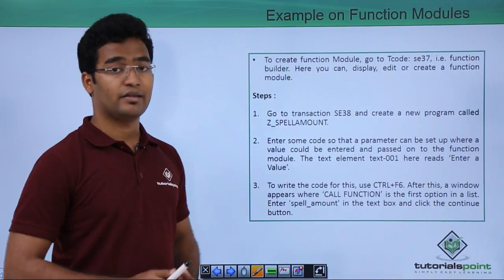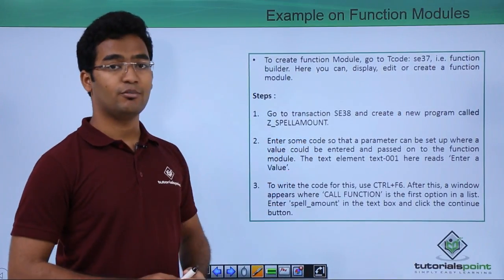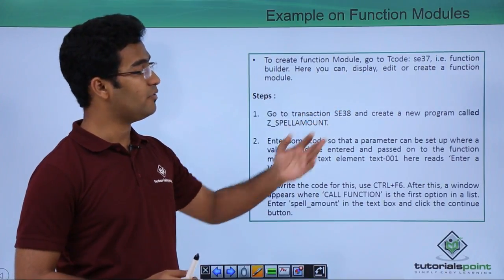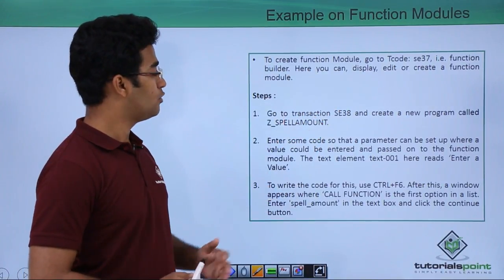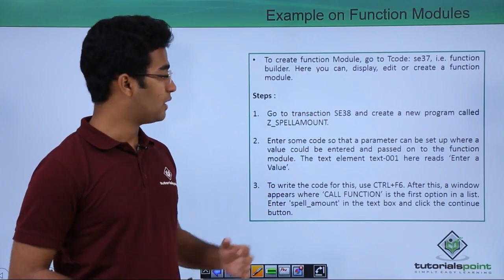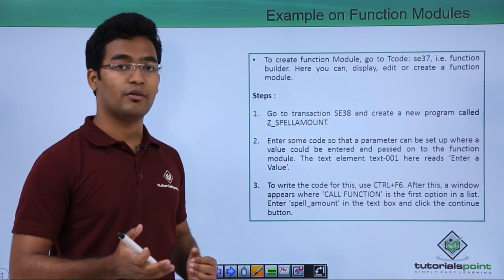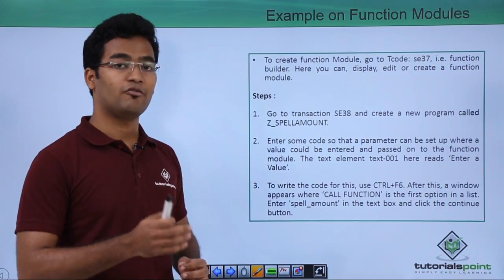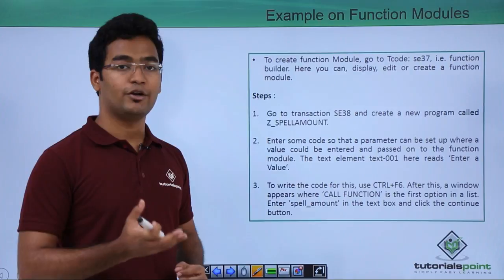So let us see an example on function modules. To create a function module, we have to go to the SE37 transaction code, that is the function builder. Here we can create our own function modules. But in this case, we are just using the predefined function module SPELL_AMOUNT — that is, whatever numeric input we give, such as 1, 2, 3, it converts into readable text.